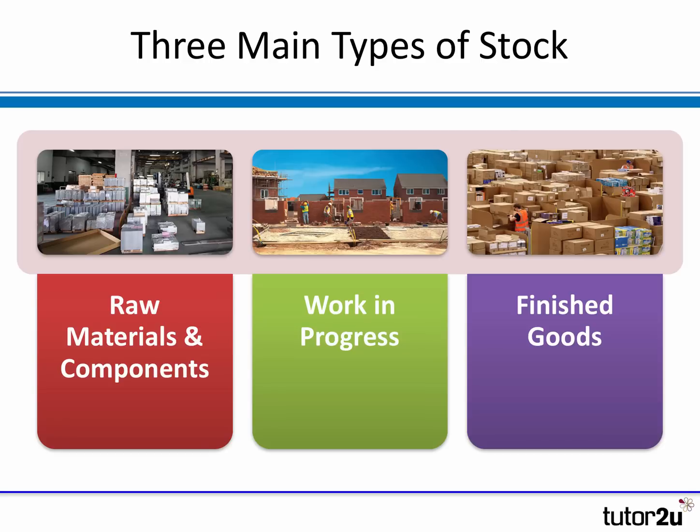Don't forget there are three main types of stock, or inventory as stock is otherwise known, in a business: raw materials and components, stock in production that's not yet complete — known as work in progress — and finally finished goods, finished products ready for sale. Stock control charts are particularly useful for raw materials and components, but also very useful for finished goods and products.